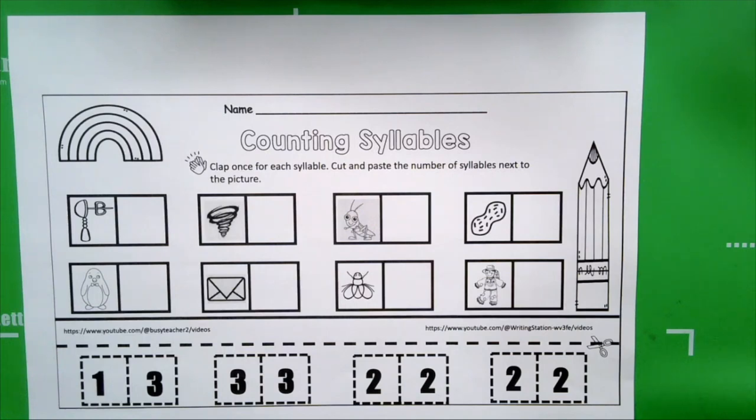When we say cat, we can clap once. The one clap is one syllable. Let's try a longer word like elephant. When we say elephant, we clap three times for the word elephant. Each clap represents one sound.